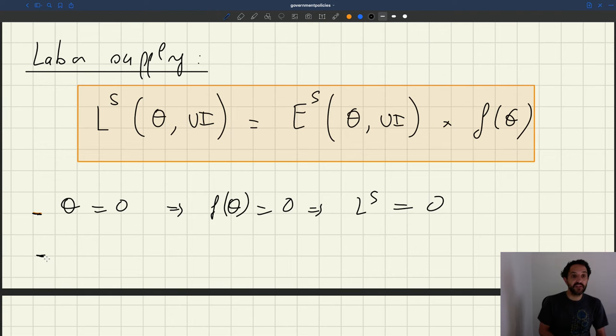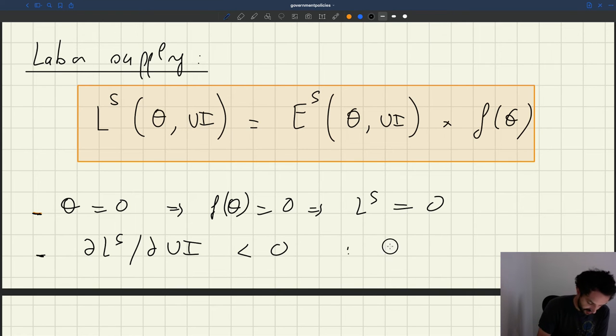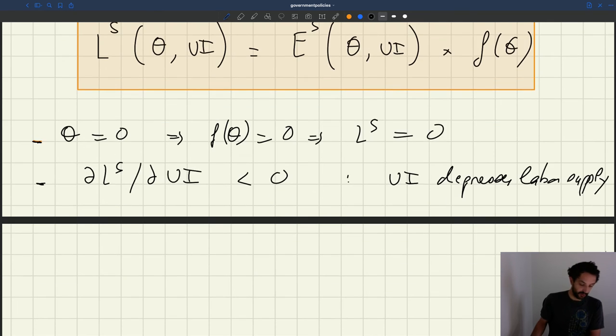What about the derivative of the labor supply? Well, we can see here that the derivative of the labor supply with respect to UI is going to be negative. So when UI is more generous, the labor supply is less. Why is that? Well, it's because when UI is more generous, there is less search effort, and therefore, there'll be less supply. So basically, UI depresses labor supply. That's going to be one of the main costs of unemployment insurance.